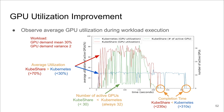Next, we show the average utilization of all GPU cards during workload execution, indicated by the red and blue lines. KubeShare almost doubled the GPU utilization of native Kubernetes. Better resource efficiency allows KubeShare to complete the workload in shorter time using fewer active GPUs, so GPU sharing can save both computing time and cost for users.